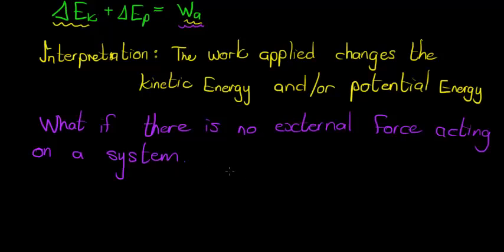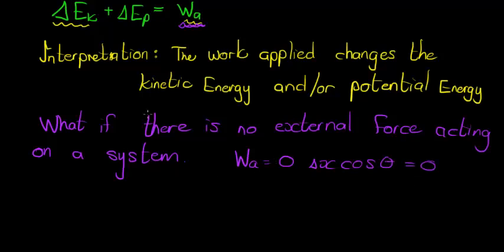So if we're only considering the gravitational force, the work applied equals zero — delta X cos whatever, it doesn't matter, because it's zero. There's no work applied, which means our formula comes down to: the change in kinetic energy plus the change in potential energy equals zero.